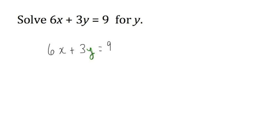So we go through the steps in solving an equation. Step 1: simplify both expressions. In this case, neither expression can be simplified. The only thing we could possibly do would be to add 6x with 3y, but 6x and 3y are not like terms, so we can't add them together. So neither expression here can be simplified.